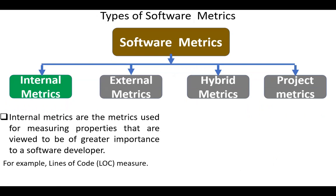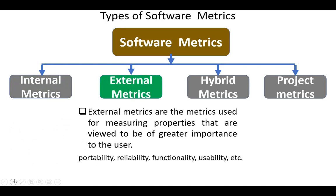Internal metrics are the metrics used for measuring properties that are important to a software developer. For example, lines of code measure. External metrics are the metrics used for measuring properties that are important for the user or the customer. Examples are usability, reliability, portability, and others.